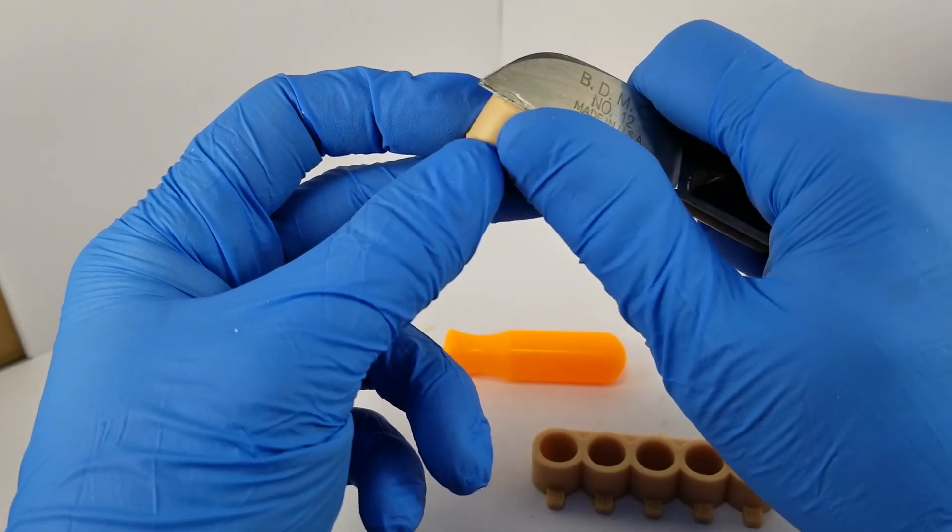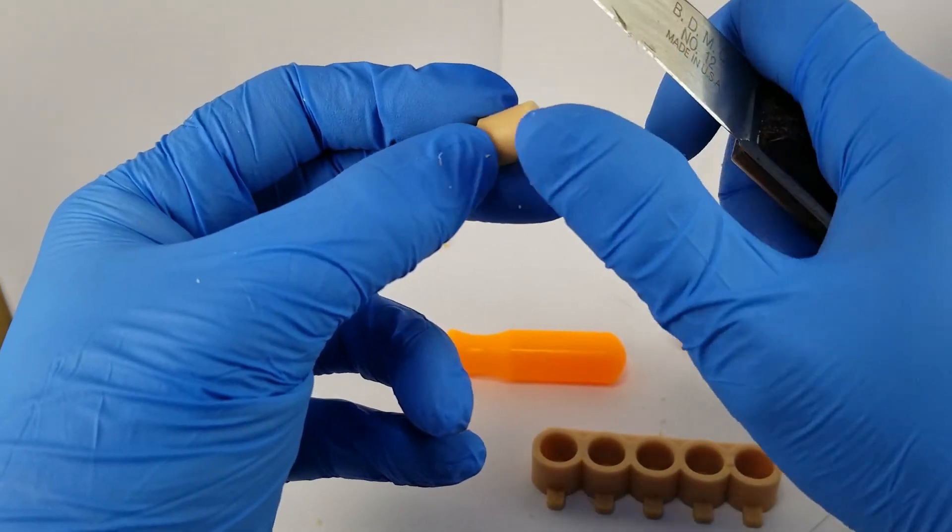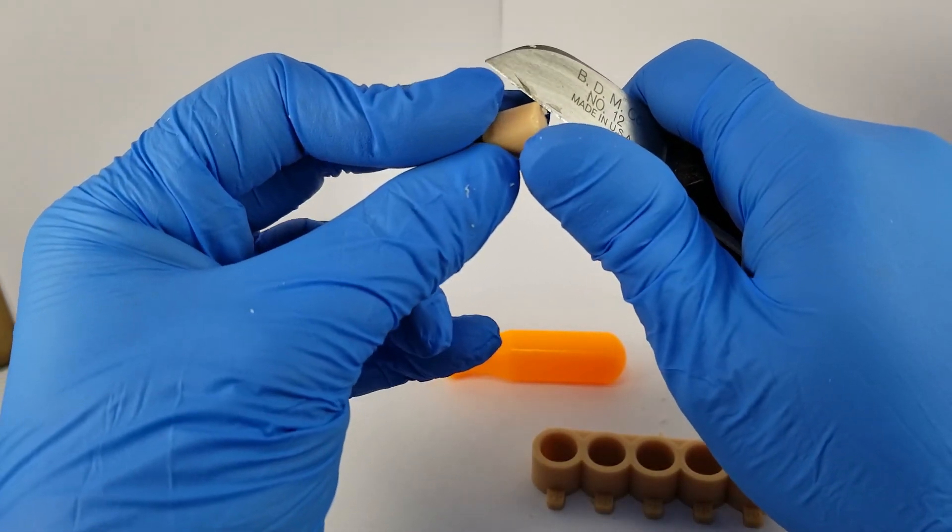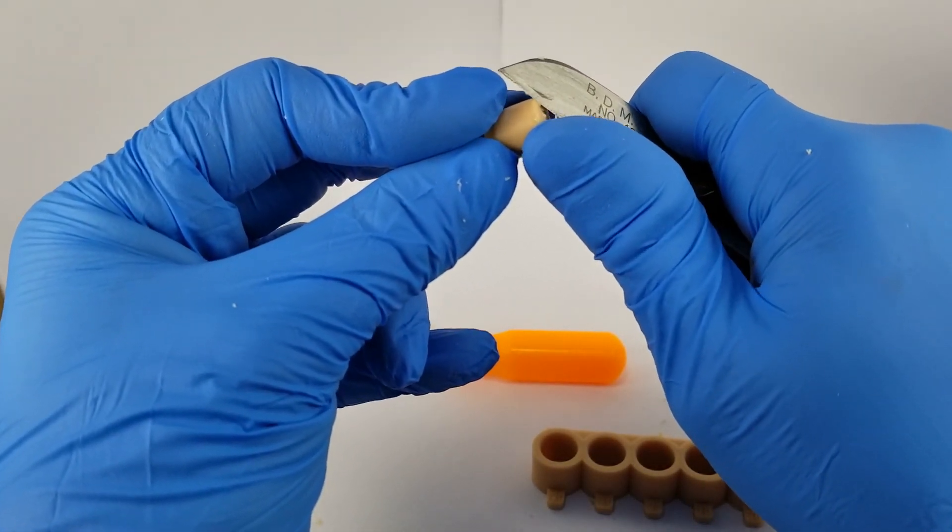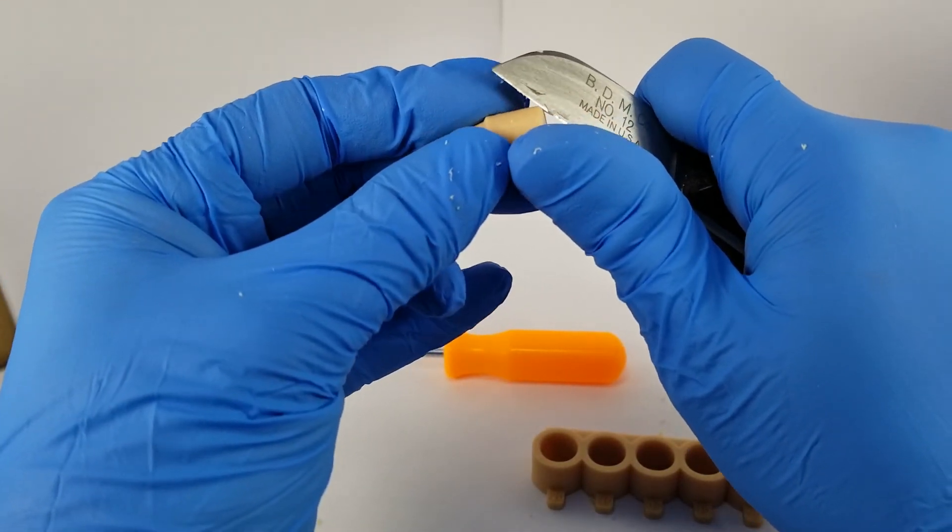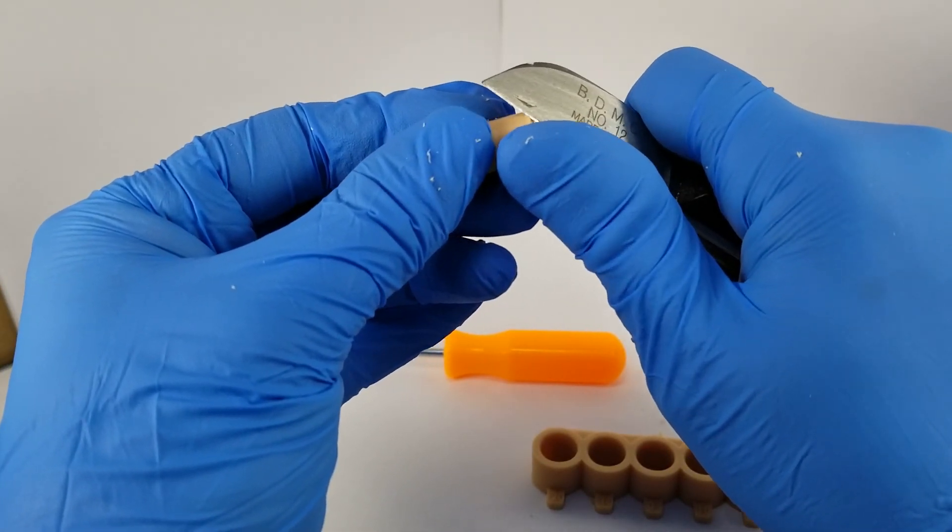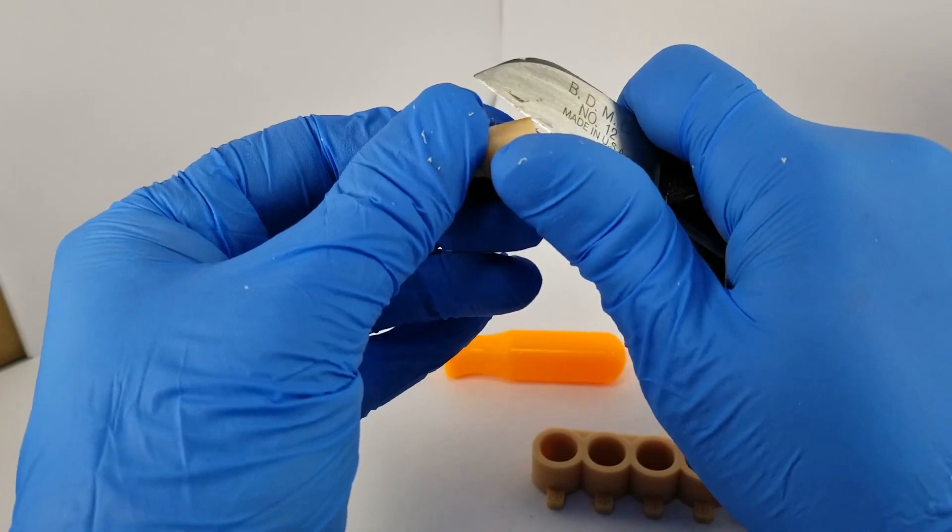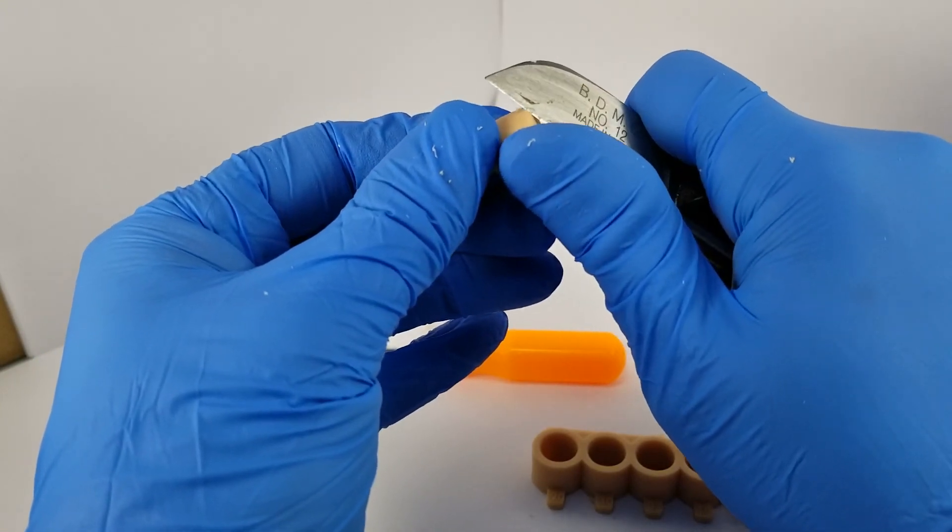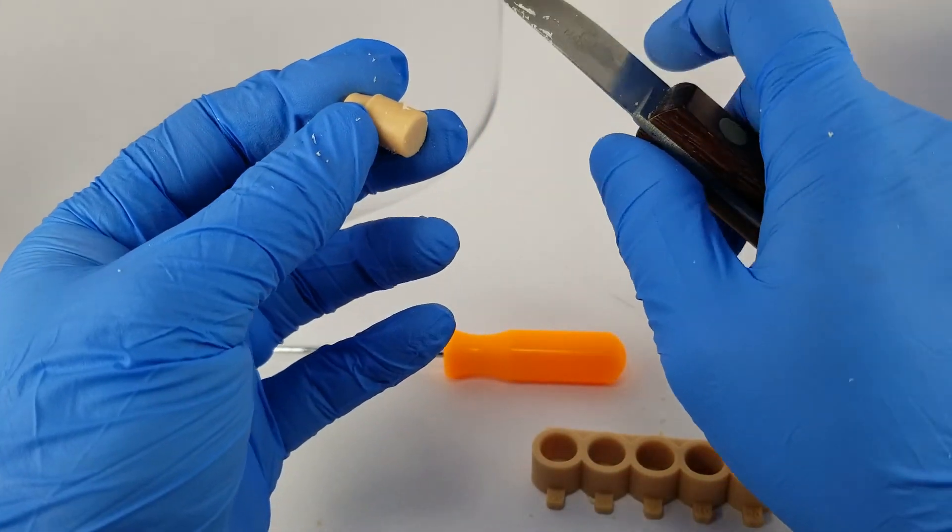And one other thing to note is you want to make sure the edges of the bottom of this die are free from supports. Over-relieving the edges is okay. It doesn't make a huge difference in seating. It's really the outer edge of the flat part of the die that really is used for seating.